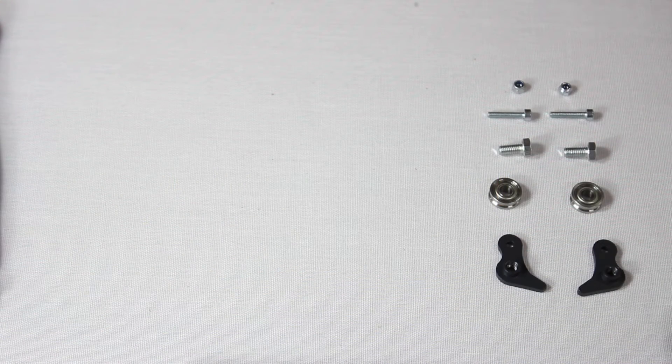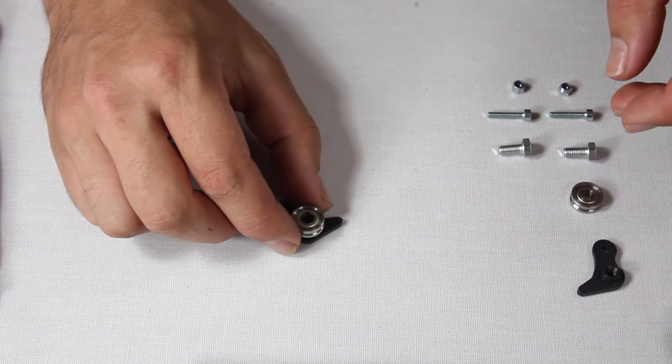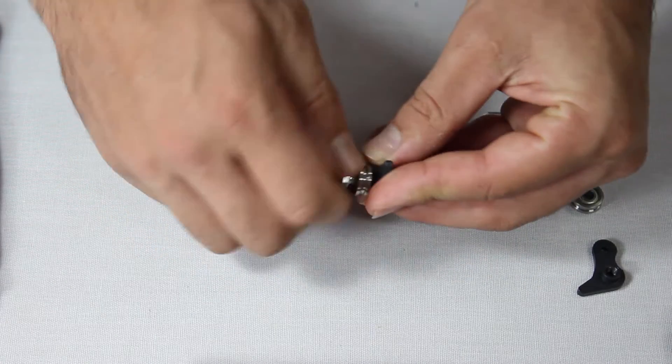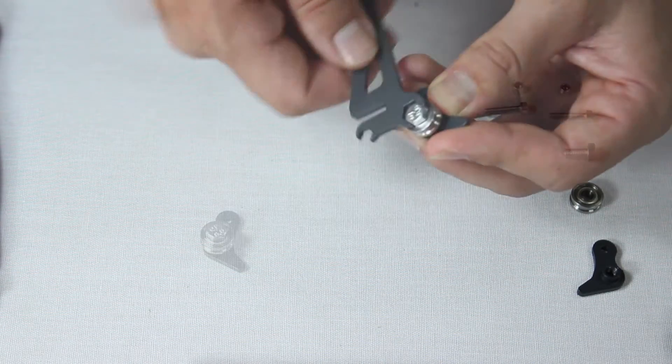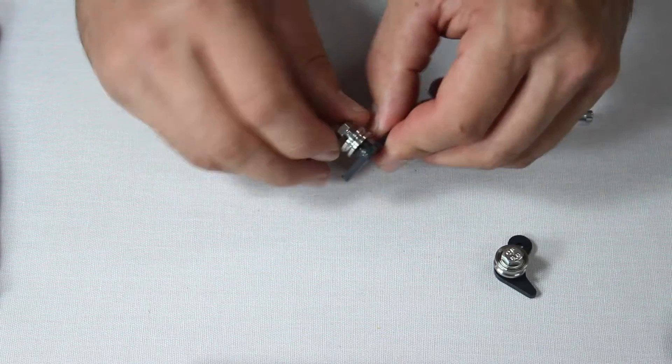For our next task, we'll be pre-assembling some components as you can see here. Screw in the bolts by hand, then tighten it well with the spool holder. Repeat with the other pieces.